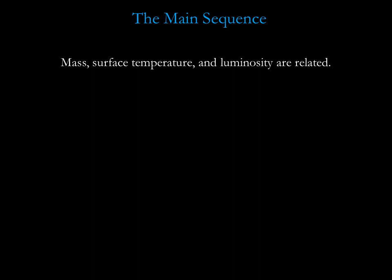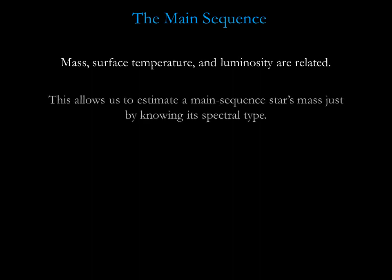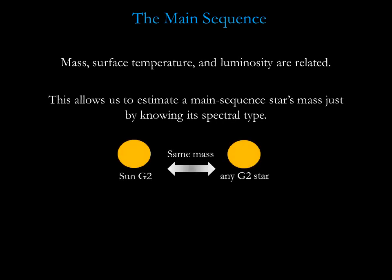The fact that mass, surface temperature, and luminosity are all related means that we can estimate a main sequence star's mass just by knowing its spectral type. For example, any hydrogen fusing main sequence star that has the same spectral type as the sun must have about the same mass and luminosity as the sun. This relationship holds only for main sequence stars, not for giants, supergiants, or white dwarfs.